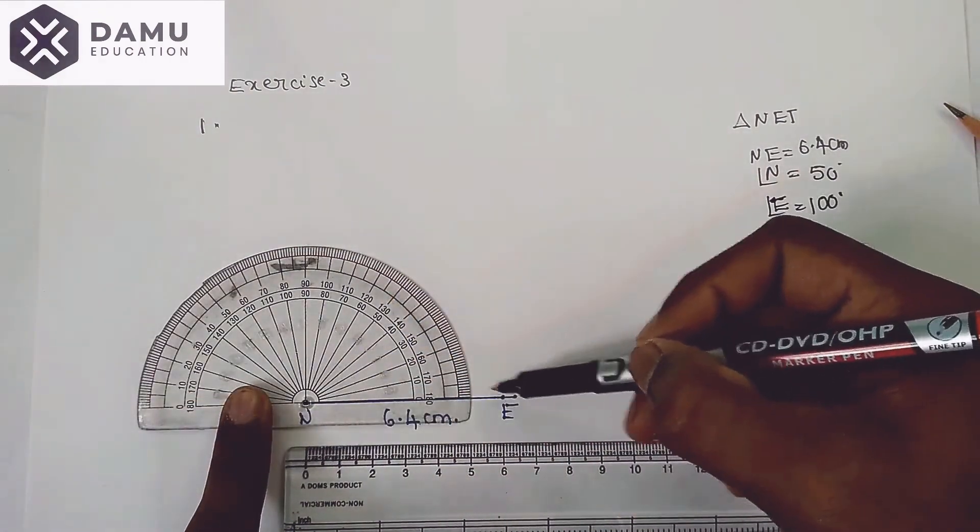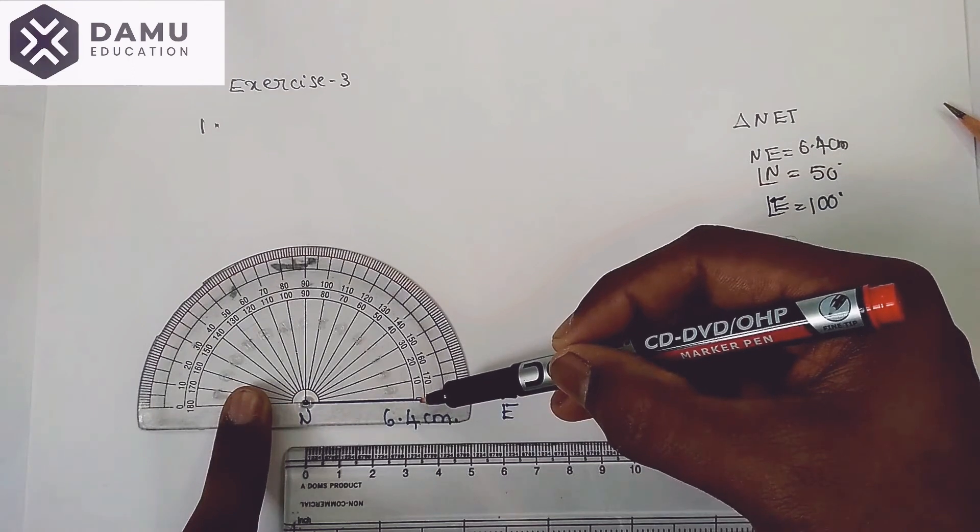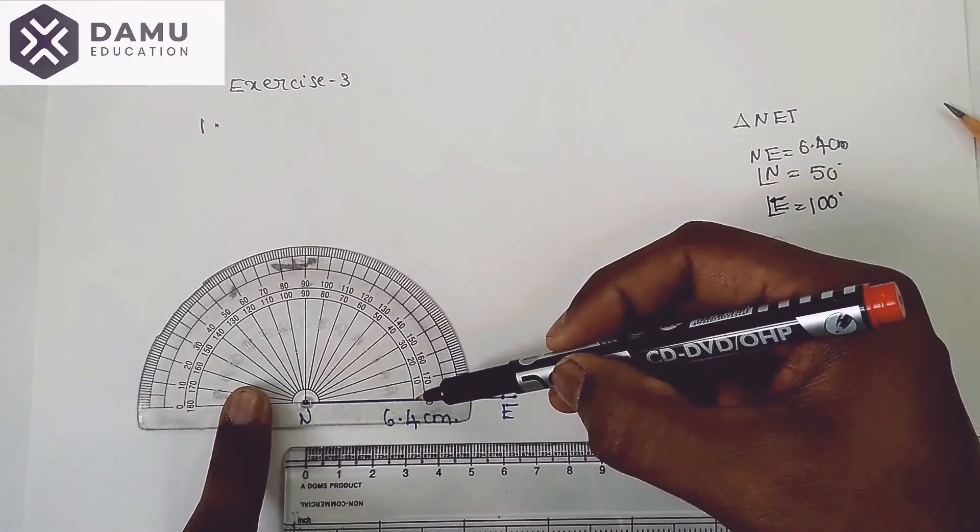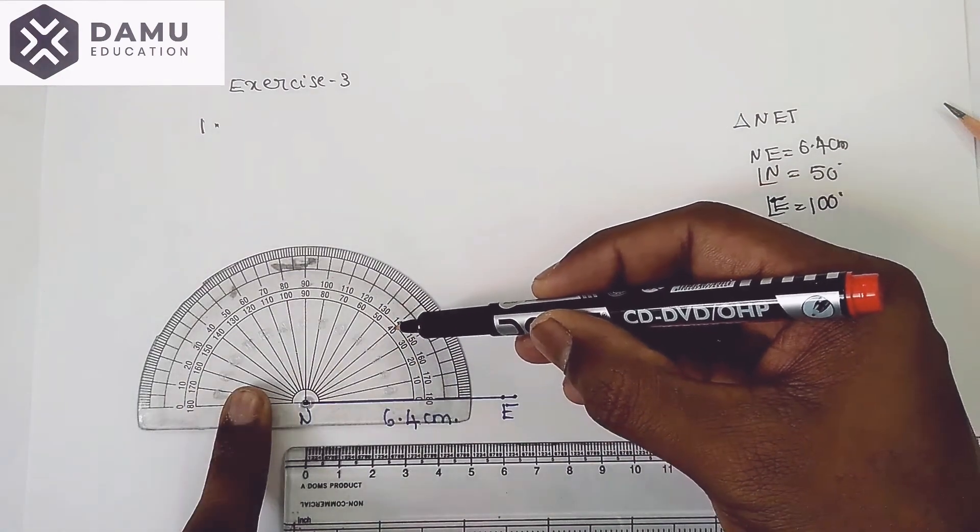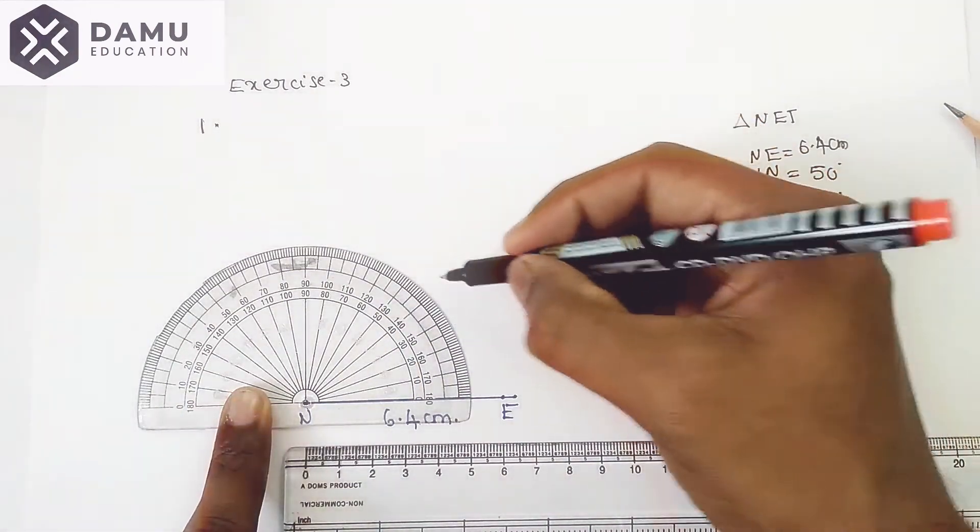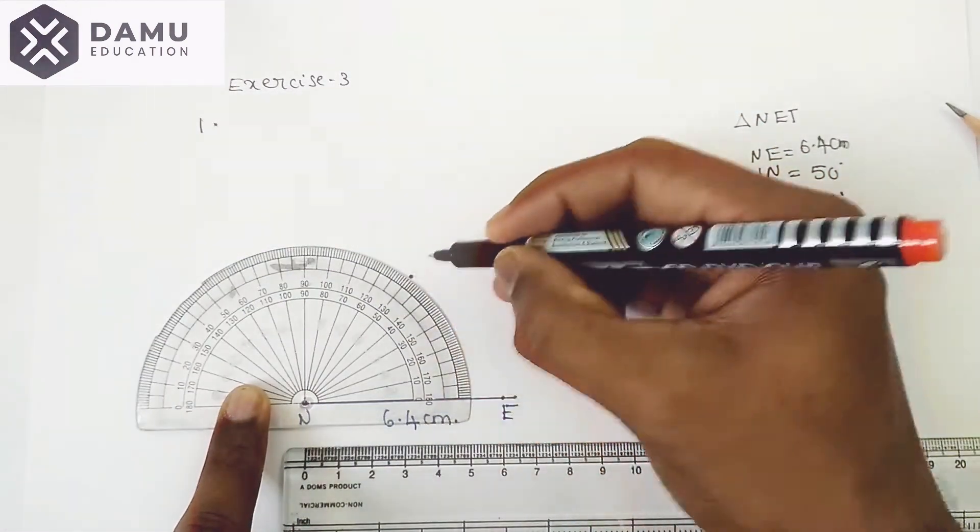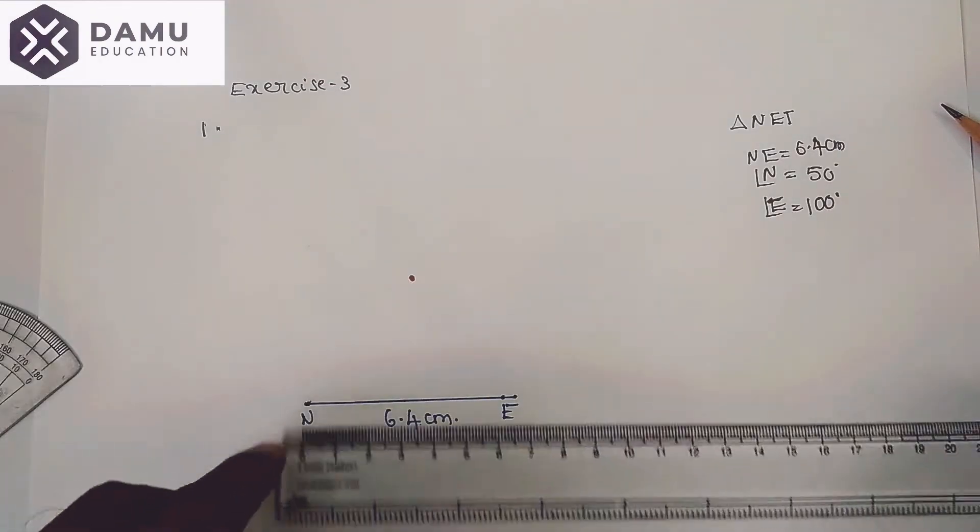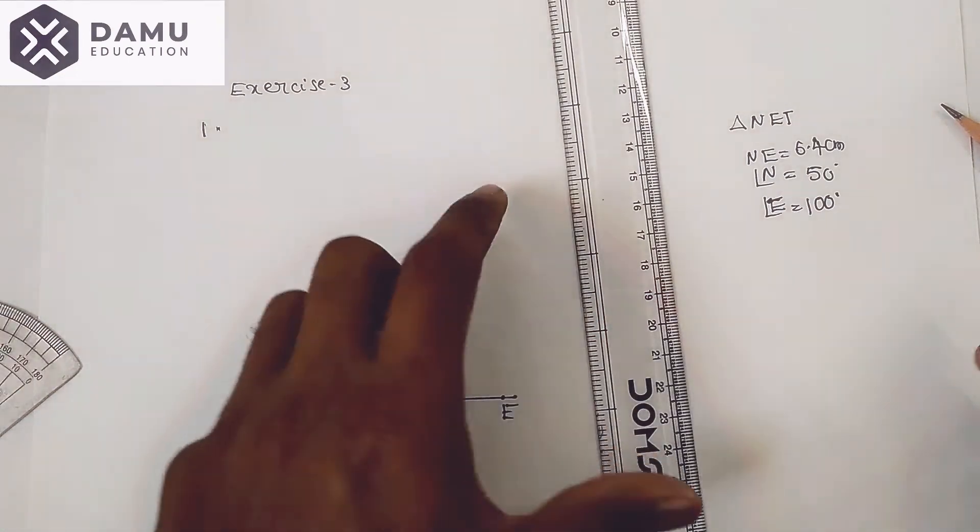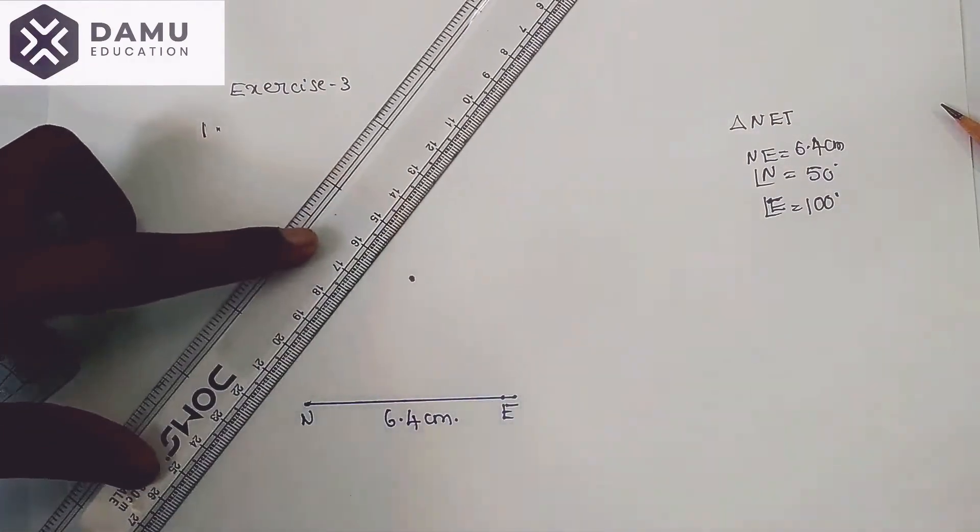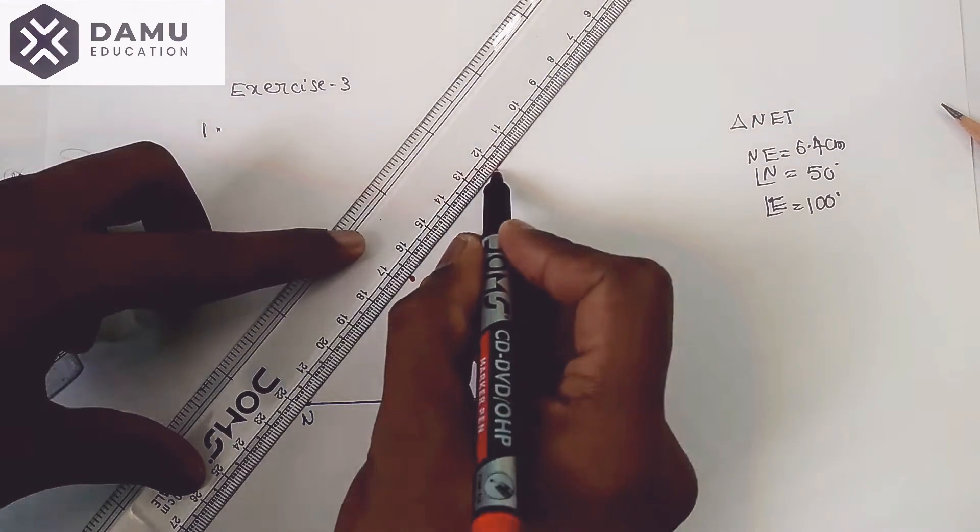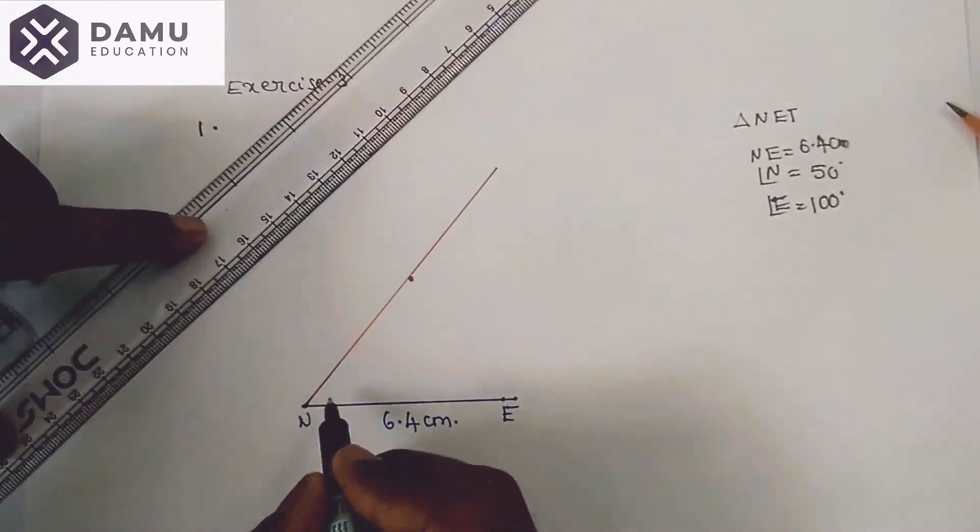This line coincides with this side of the protractor. From that you take the angle: 0, 10, 20, 30, 40, 50 degrees. Keep a point here and draw one ray from angle N, making angle 50 degrees.